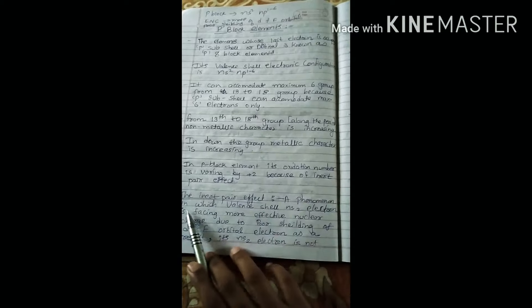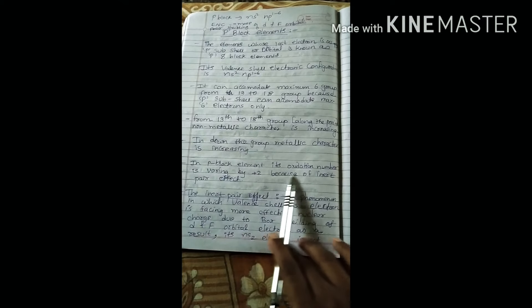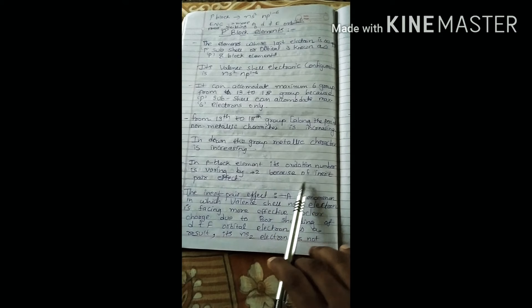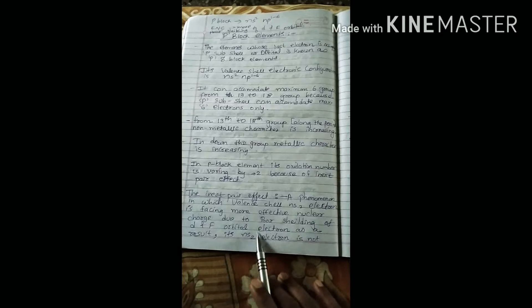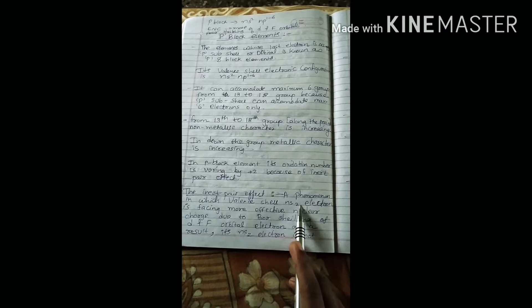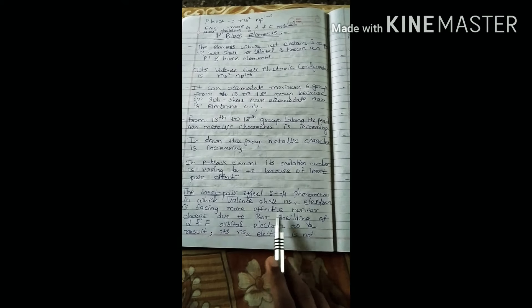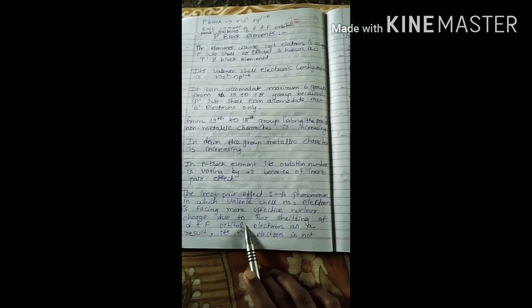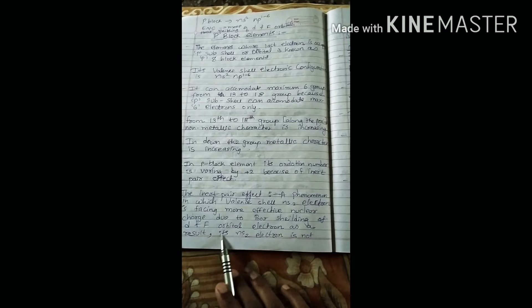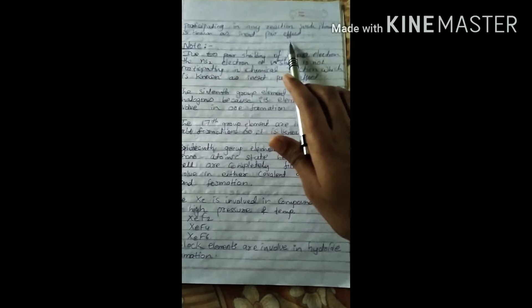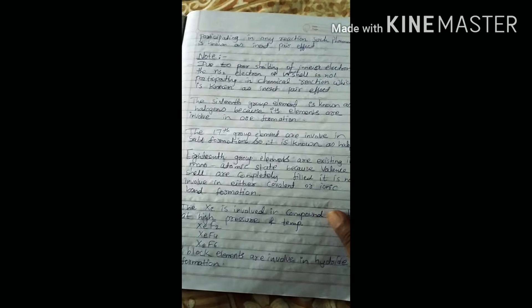The p block elements' oxidation number is varying by plus 2 because of the inert pair effect. What is inert pair effect? A phenomenon in which valence ns² electrons face more effective nuclear charge due to poor shielding of d and f block orbital electrons. As a result, the ns² electrons are not participating in any reaction. Such phenomenon is known as inert pair effect.